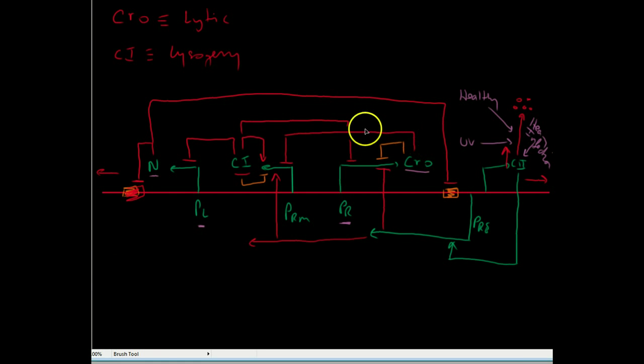And so CROW starts to rise. It starts to inhibit CI production. With CI in decline, this repression is lifted. So N starts to get made. So with N becoming made, these terminators get switched off. So we get expression left or right. And the entire system then switches to one that's dominated by CROW with hardly any CI. And so we go into the lytic phase.